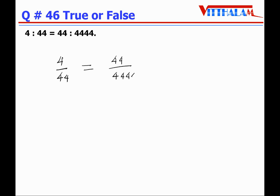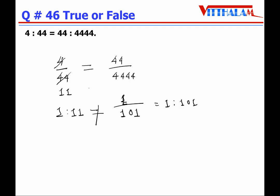Question 46: 4:44 equals 44:4444 — False. 4:44 simplifies to 1:11. For 44:4444, dividing by 44 gives 1:101. So 1:11 is not equal to 1:101, and the given statement is False.